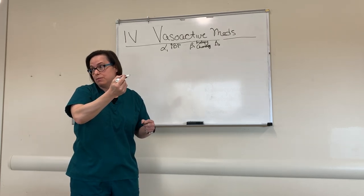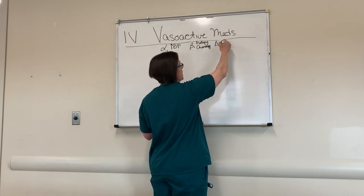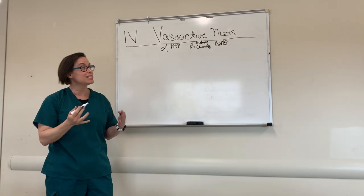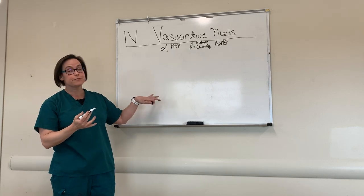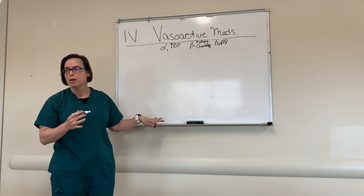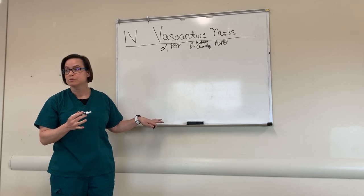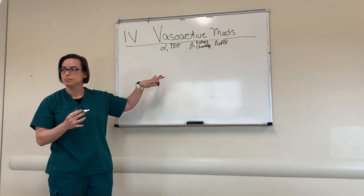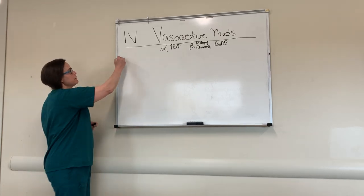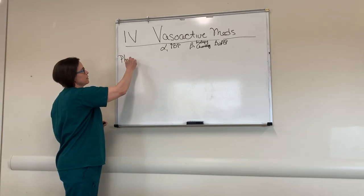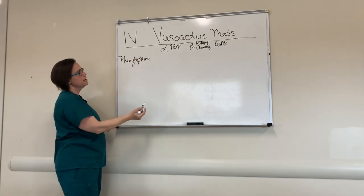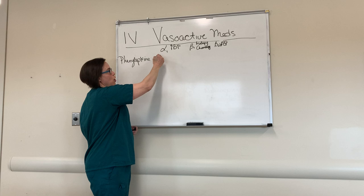Beta-2 actually causes vasodilation, so it can make your blood pressure go down. Keep that in mind as we go through this. There are some medications that affect other receptors too, and we'll talk about those when we hit specific ones, but these are the key places to start.